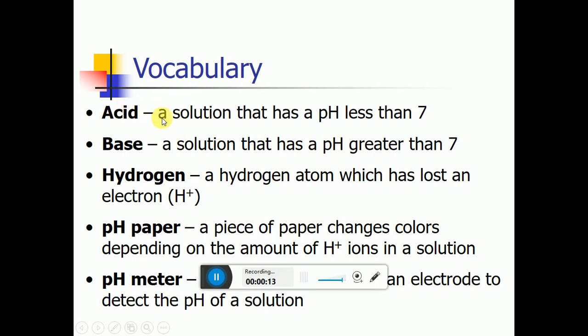As you know, acids are solutions that have a pH less than 7. The base is a chemical that has pH greater than 7. Hydrogen is a hydrogen atom which has lost an electron. pH paper is a piece of paper which changes color depending on the amount of hydrogen ions in the solution. And the pH meter is an instrument that has an electrode to detect the pH of a solution.